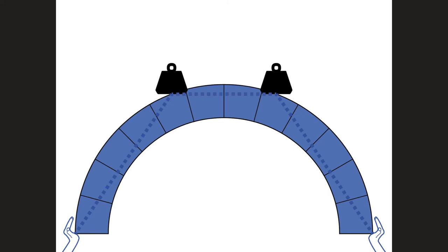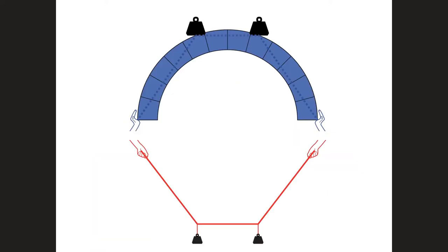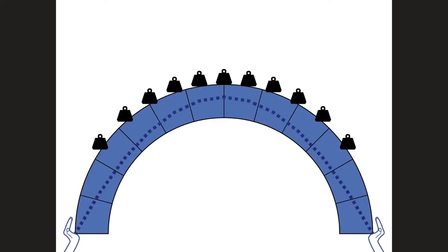Interestingly, if you have a symmetric load on a symmetric semicircular arch, the thrust line is now all inside the arch geometry — perfectly stable. Going back to the analogy: you can see the shape a cable takes under two symmetric loads, and that is exactly the opposite of the thrust line that remains inside the arch.